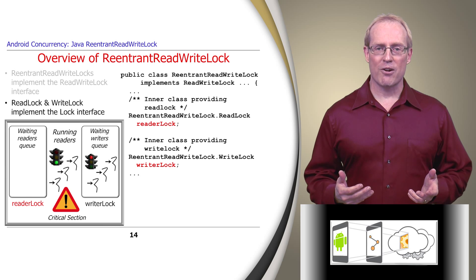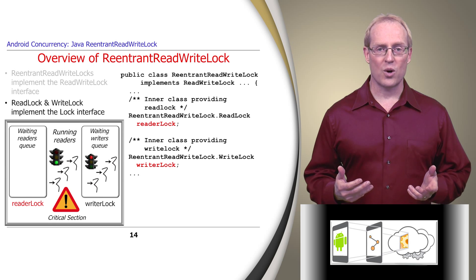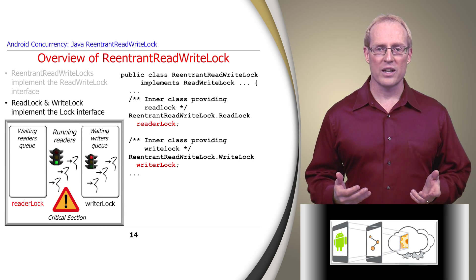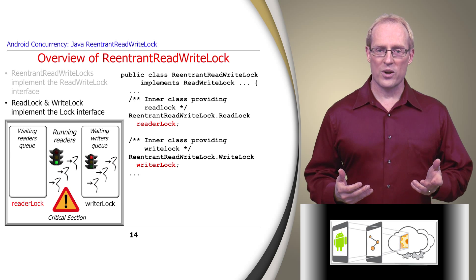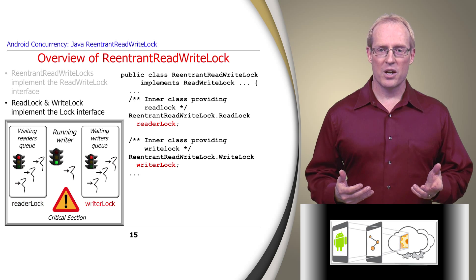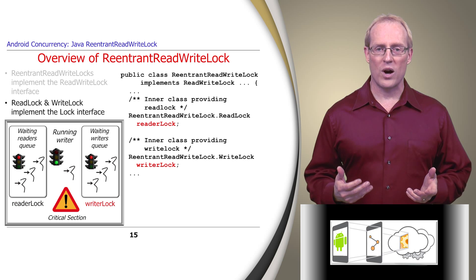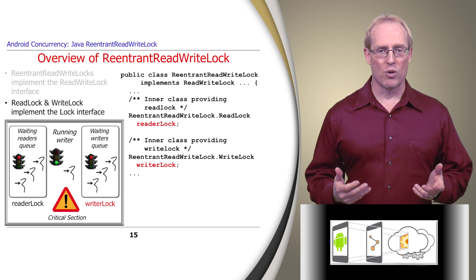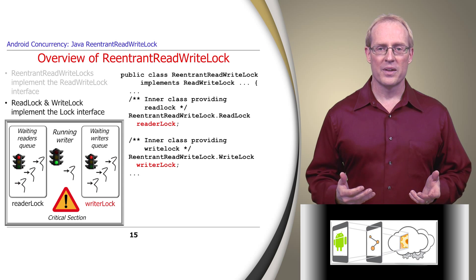This diagram shows how multiple reader threads can acquire the ReaderLock and execute concurrently, whereas this diagram shows how just one writer can acquire the WriteLock and run at a time.